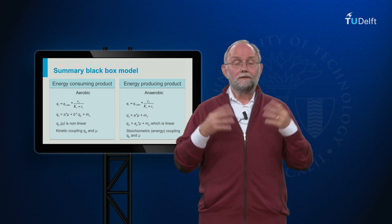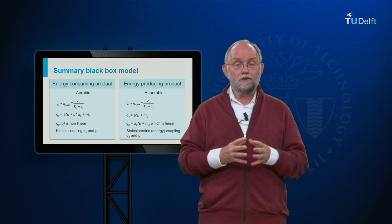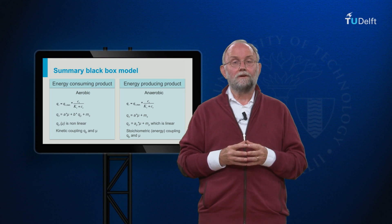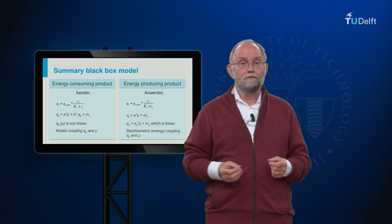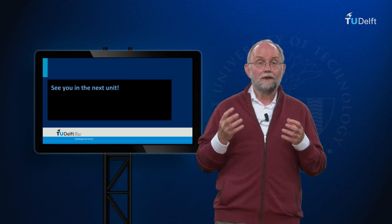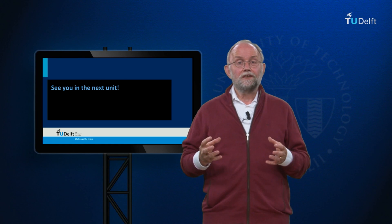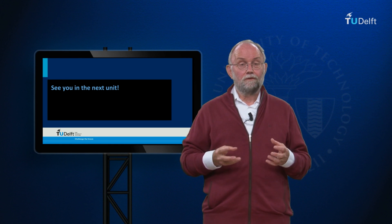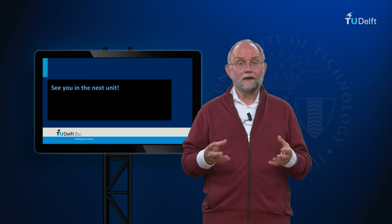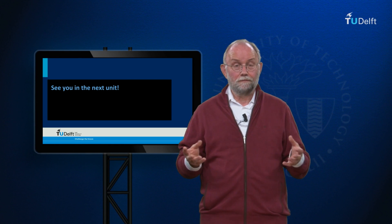Having proposed the structure of black box models for both product categories — noting similarities in substrate uptake and maintenance, and differences in the Qp-mu relation (non-linear vs. linear) and the Herbert-Pert relation (three terms vs. two terms) — next time we will focus on the parametrization of these black box models. See you back next time.